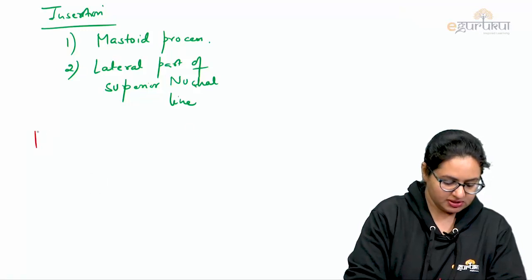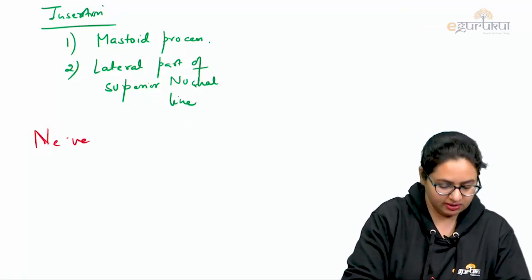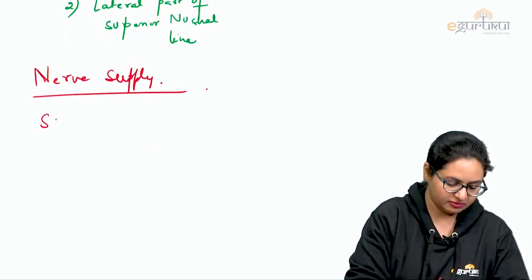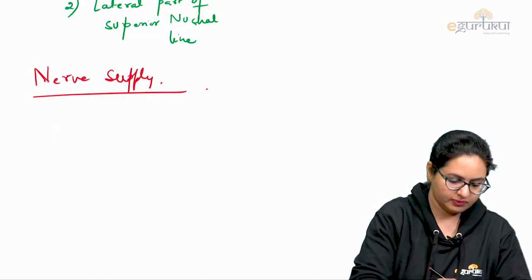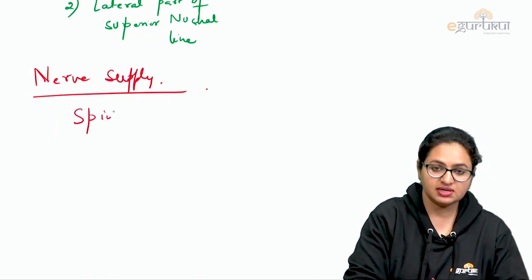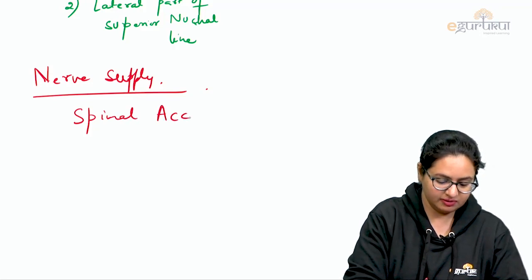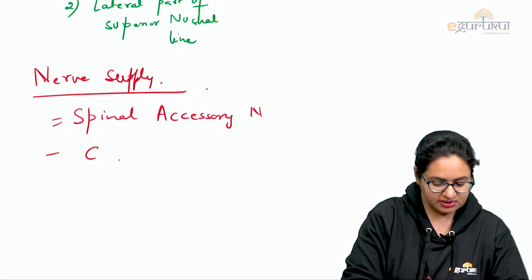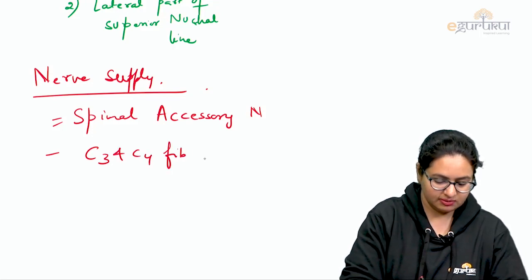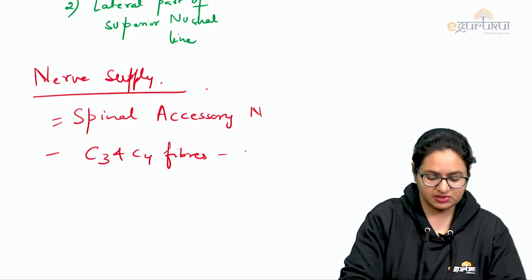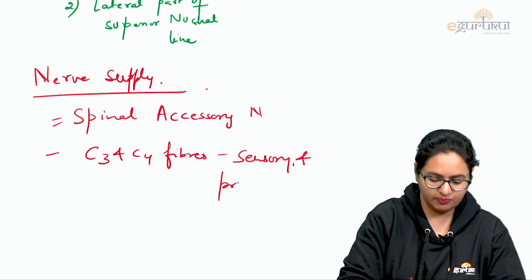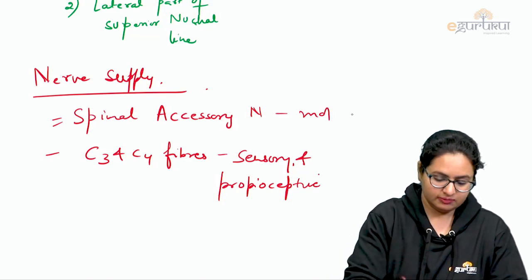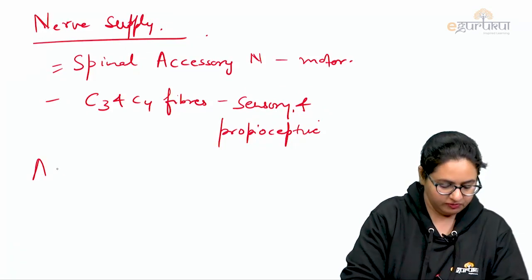The nerve supply of this muscle comes from one of the cranial nerves — the spinal root of the accessory nerve, or the spinal part of the accessory nerve. The motor nerve supply is the spinal accessory nerve, which is the 11th cranial nerve. Apart from this, C3 and C4 cervical nerve fibers act as sensory fibers for this muscle, providing sensory and mainly proprioceptive supply.